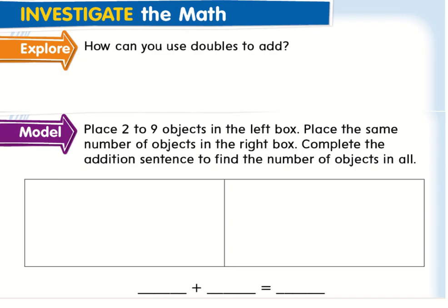Now the first thing we have to do is: how can you use doubles to add? We actually have to talk about what a doubles fact is going to be when we talk about math. A doubles fact is when you have a number plus a number that is exactly the same. So for example, if I use the number one plus one, those two numbers are the same exact one, so that's called a double fact.